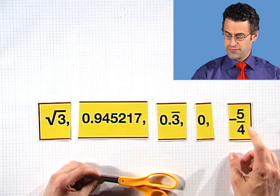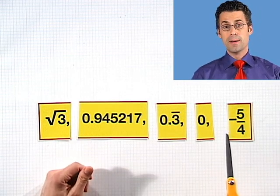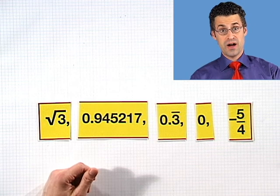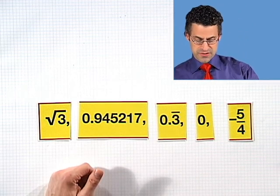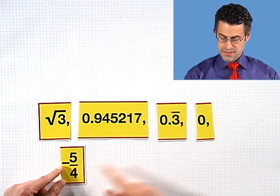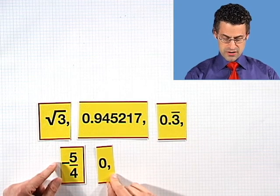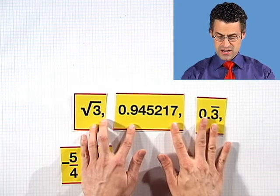And then finally we have negative 5 fourths. And negative 5 fourths turns out to equal in decimal negative 1.25. So now if we're going to order these things certainly the negative numbers are the smallest. There's only one. So we have negative 5 fourths. Then we've got zero because zero is smaller than all the positive numbers. And then I've got these numbers. Now what comes next?